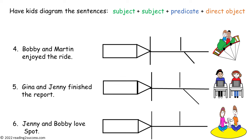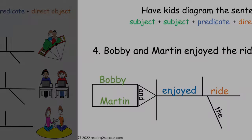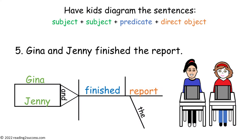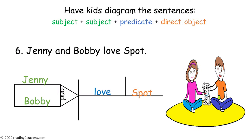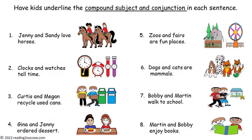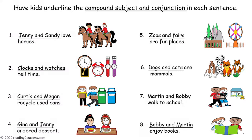Now have kids diagram sentences 4, 5, and 6: sentence 4, sentence 5, and sentence 6. Here is the completed example. Then have kids underline the compound subject and conjunction in each sentence, and here is the completed example.